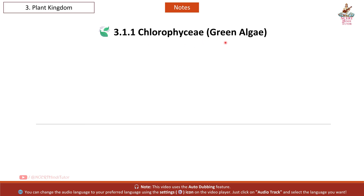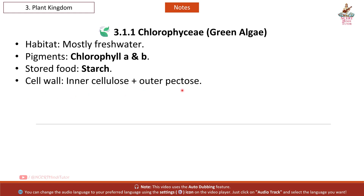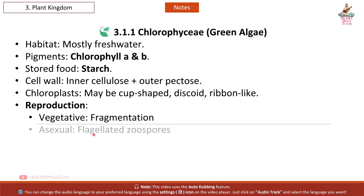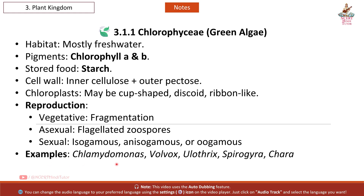Chlorophyceae — green algae. Habitat: mostly freshwater. Pigments: chlorophyll A and B. Stored food: starch. Cell wall: inner cellulose plus outer pectose. Chloroplasts may be cup-shaped, discoid, or ribbon-like. Reproduction: vegetative by fragmentation; asexual by flagellated zoospores; sexual by isogamous, anisogamous, or oogamous methods. Examples: Chlamydomonas, Volvox, Ulothrix, Spirogyra, Chara.